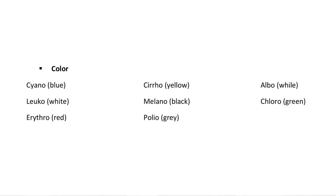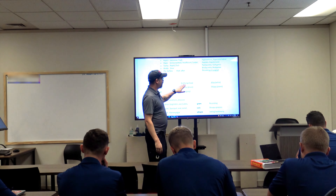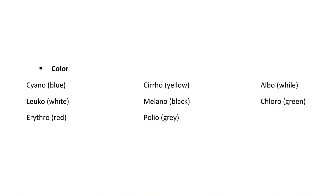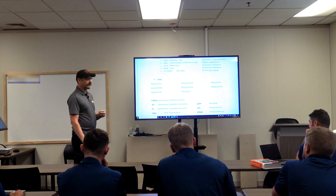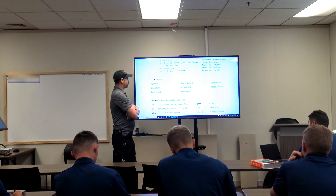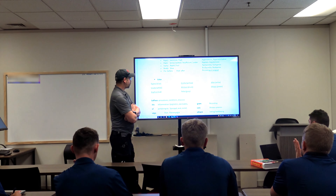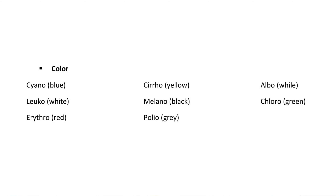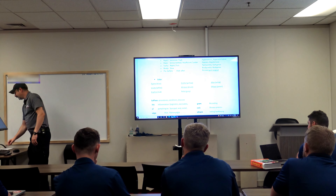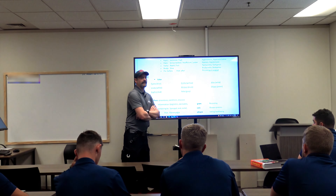Leuko means white and erythro means red — white blood cells and red blood cells are leukocytes and erythrocytes. Sero is associated with yellow — liver cirrhosis causes jaundice where the skin turns bright yellow. Melano is black — melanomas are skin cancers presenting as little black spots. Polio means gray, albo means white — a good example is albino. Chloro is green.